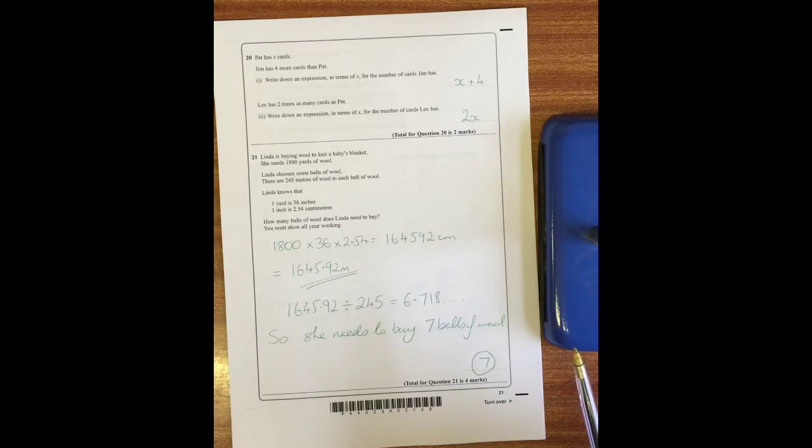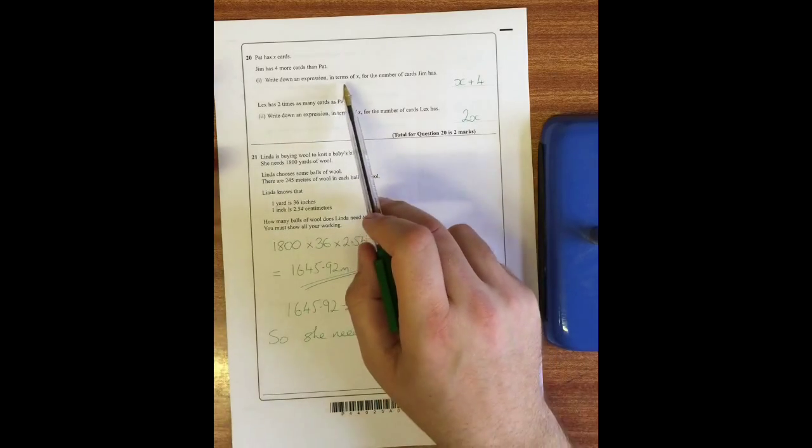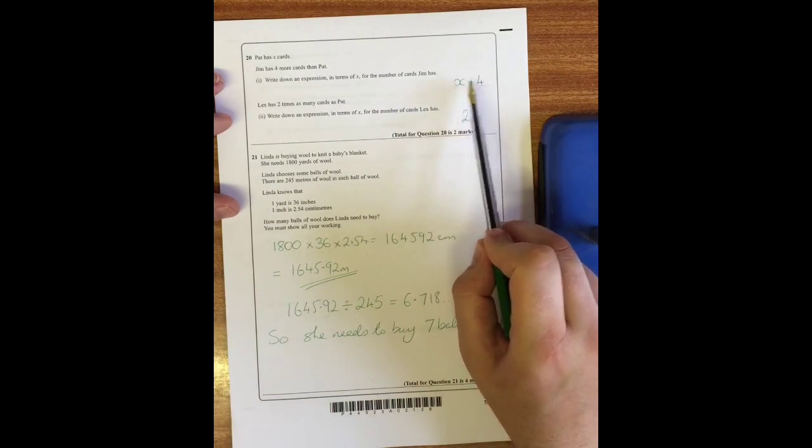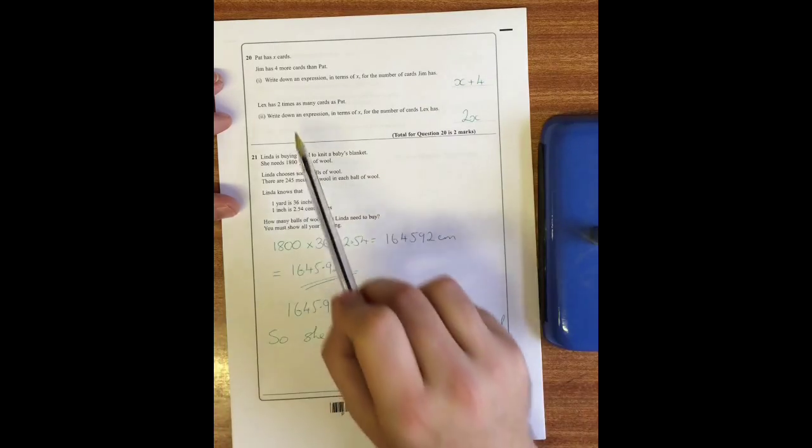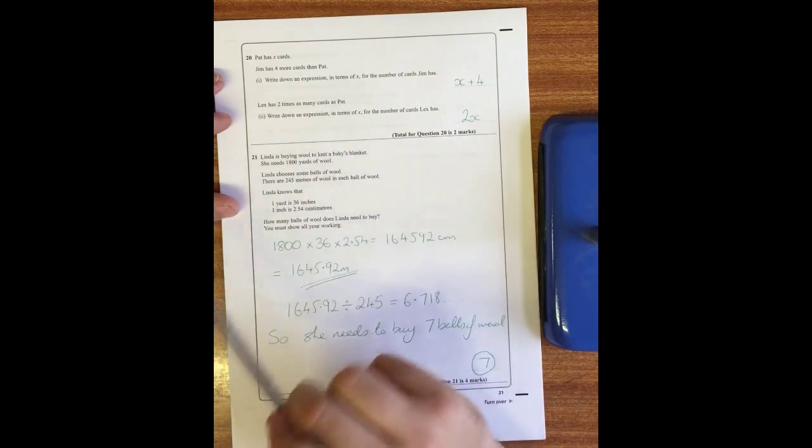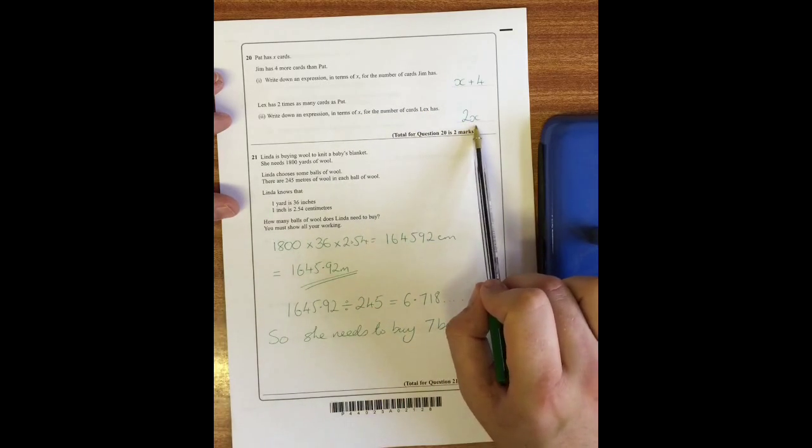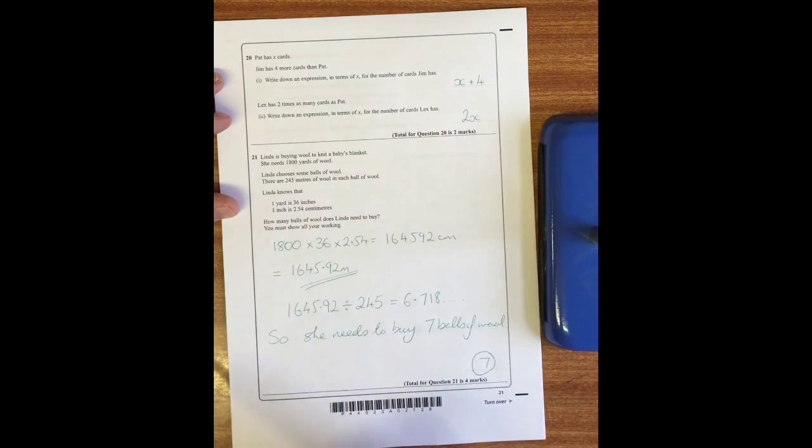Question 20: Pat has x cards and Jim has four cards more than Pat. Write down an expression in terms of x for the number of cards Jim has. Well Pat has x, he has four more, so it's x plus four. Lex has two times as many as Pat. Write down an expression in terms of x for the amount that Lex has. Well if Pat has x and he has twice as many, you do 2x.